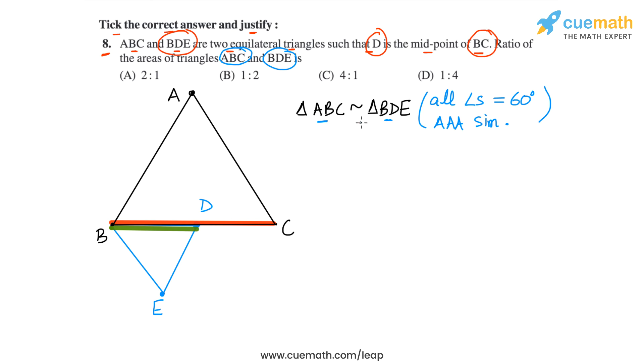And the order of the vertices could be anything. So ABC could be similar to BDE, BED, DBE, EDB, whatever you want to write, because all the angles at all vertices are equal to 60 degrees.